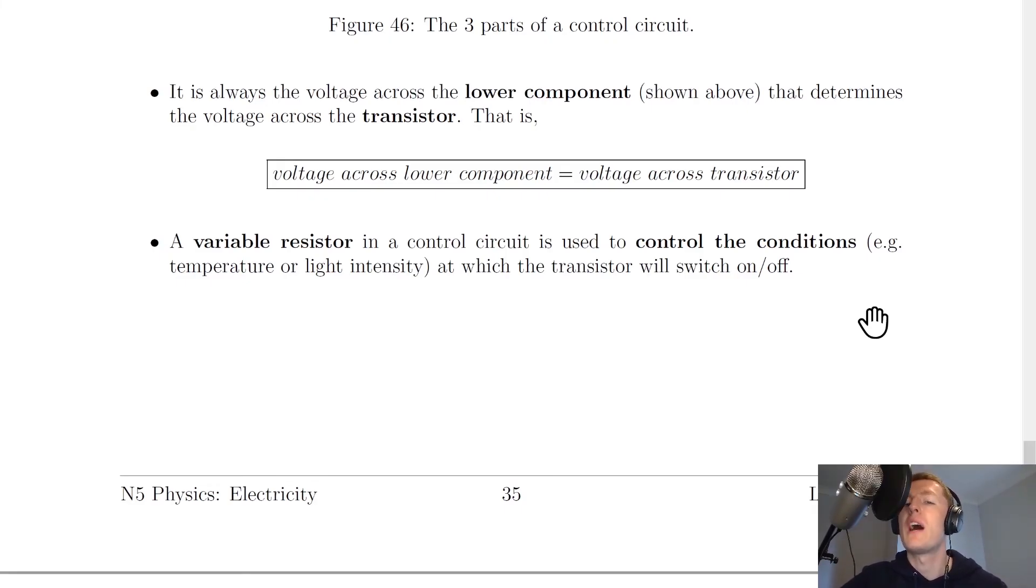And this all happens automatically due to sensors. Nobody is actually physically switching these street lamps on and off at a certain time. If we think about these examples with the variable resistor aspect, what we could do is we can control the conditions at which these things would turn on. For example, with the street lamps we could control what light level the street lamps turn on or off at, which is going to be useful because the light level will change throughout the year as we get different seasons.